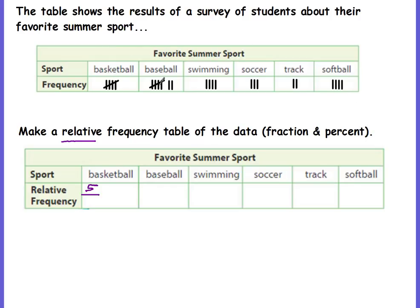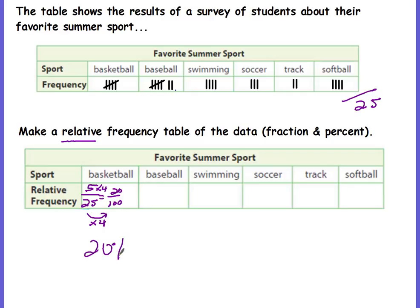Adding up: 5, 10, 12, 16, 19, 21, plus four is 25. So it's five out of 25. To change that to a percent, we need to change the denominator to 100. Our scale factor — 25 times four gives us 100 — multiply five times four, and that gives us 20 out of 100. So our percent is 20%.